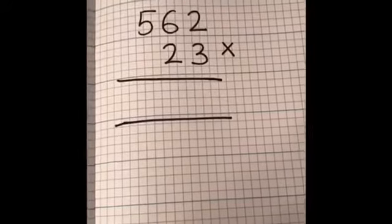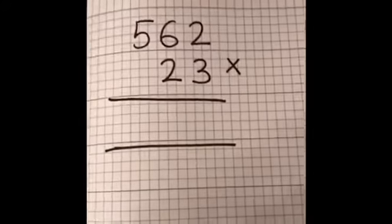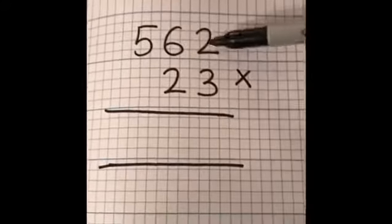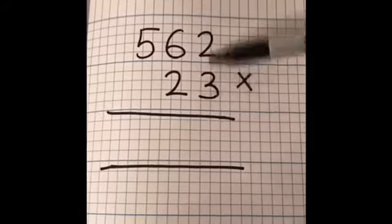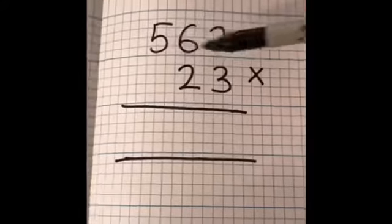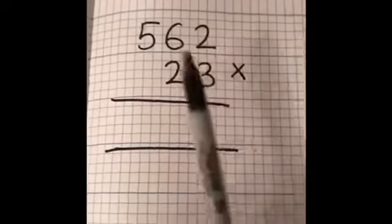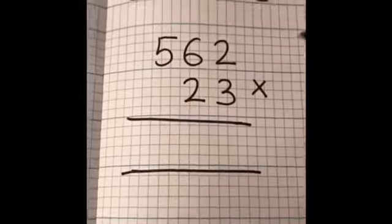Okay, so we've got a calculation here: 562 times 23, or 562 multiplied by 23, and I've already set it out for us. As you can see, the numbers are in the correct columns – we've got my ones here, my tens, and my hundreds. If we were going to be multiplying a four-digit number, that would obviously just go there, and so on. We'd work our way across.